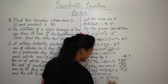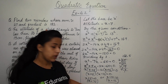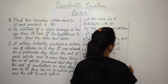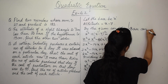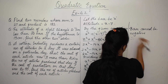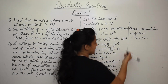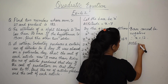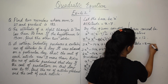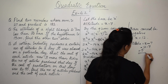Since the base cannot be negative, we ignore x = -5 and take x = 12. Therefore the base is 12 cm and the altitude is x - 7 = 12 - 7 = 5 cm.